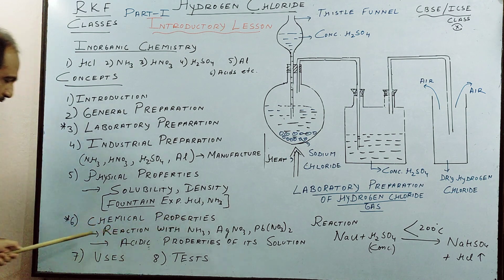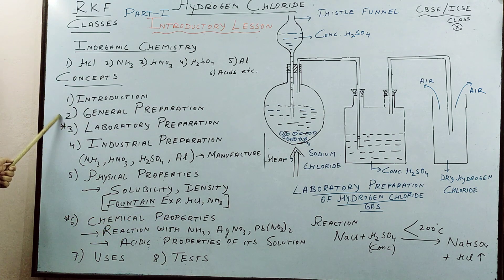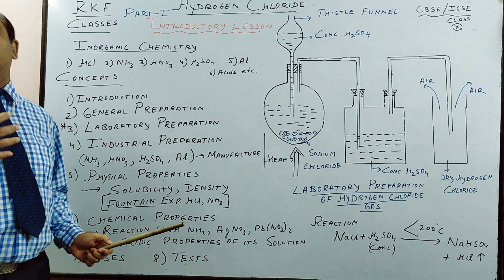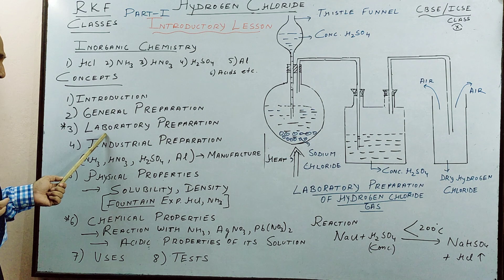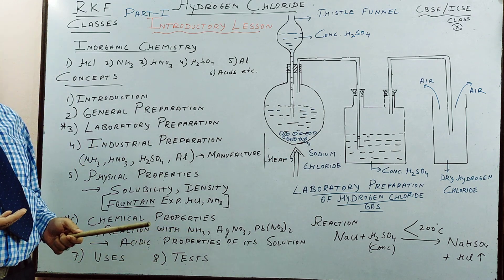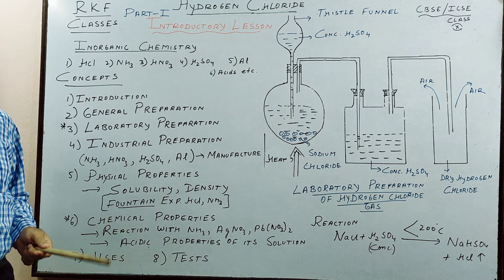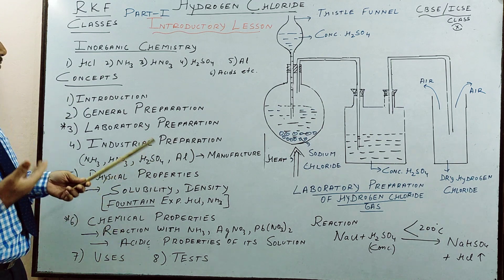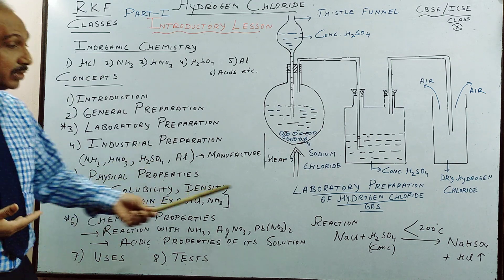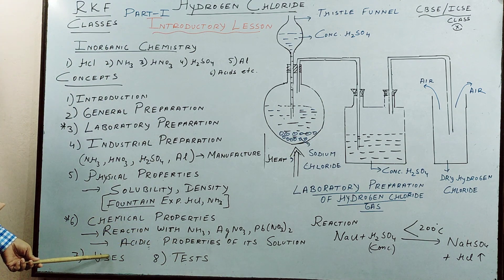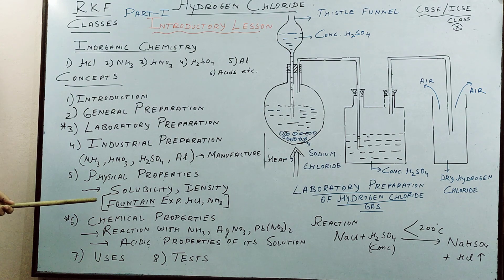Next is chemical properties. These are very important from examination point of view — they are the main heart of the chapter. What do we see in chemical properties? How it reacts with various compounds, under what condition, and what are the observations — observations are very important in ICSE. Sometimes you have to just give the observation; sometimes you have to give the reaction. Next we have uses and tests — how they are used. Hydrochloric acid, for example, is used for cleaning metal before any other operation.